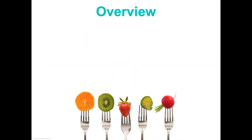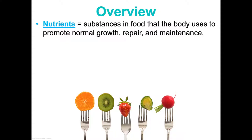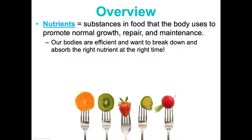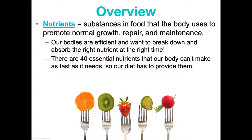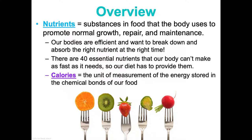A little overview: what are nutrients? Nutrients are substances in food that the body uses to promote normal growth, repair, and maintenance. Our bodies are very efficient — we want to break down and absorb the right nutrients from our food at the right time. There are 40 essential nutrients that our bodies can't make fast enough, so our diet has to provide them. Calories are the unit of measurement of the energy stored within the chemical bonds of our food.